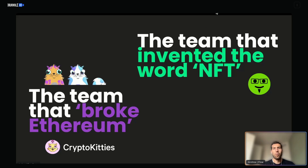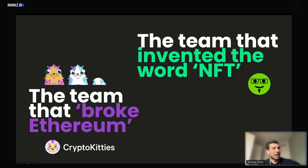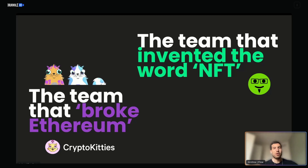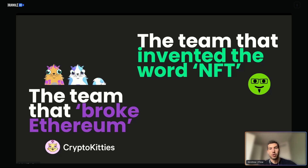What is Flow and why does it exist? The team that created Flow is actually the team behind CryptoKitties in 2017. CryptoKitties was the first project that actually broke Ethereum due to the overwhelming demand. That quickly gave a signal that Ethereum is not really fit for millions of users, probably only tens of thousands. And that also led to a lot of L2s being created and a lot of sharding solutions. Funnily enough, the same team that created CryptoKitties also invented the term NFT.